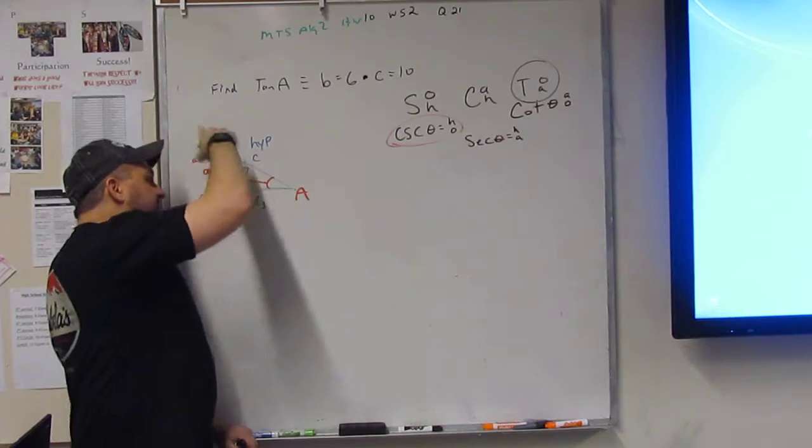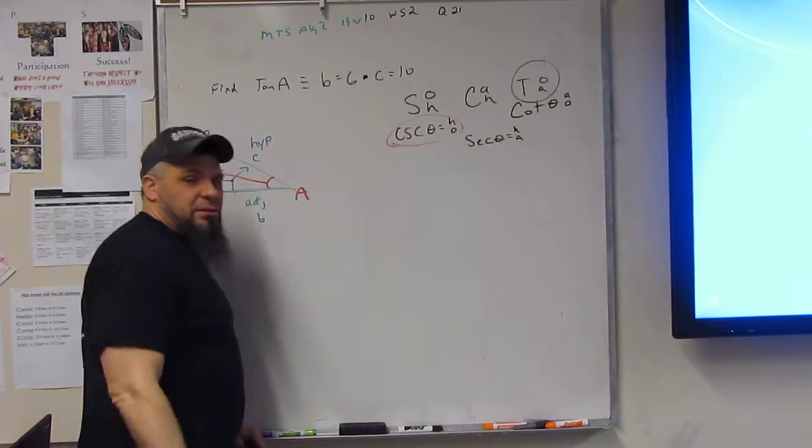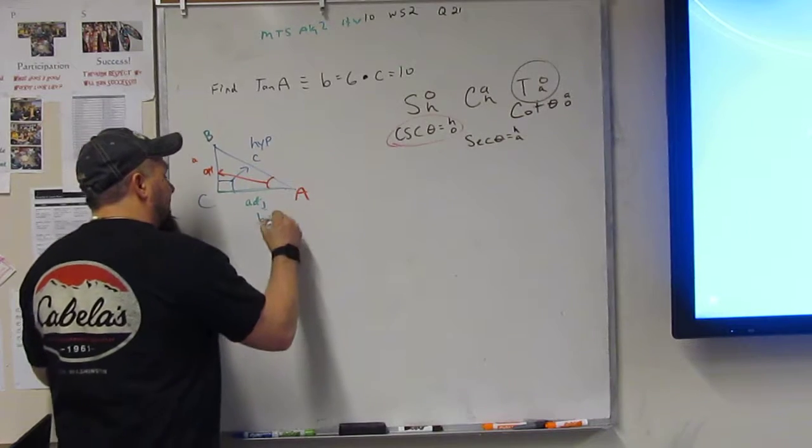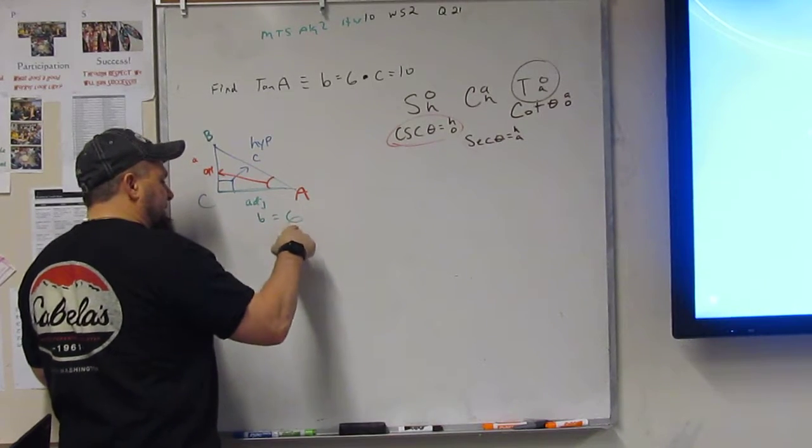Which means the opposite side of B is little b. And that's huge, because we know that little b equals 6. So that's a 6 and that's a B.